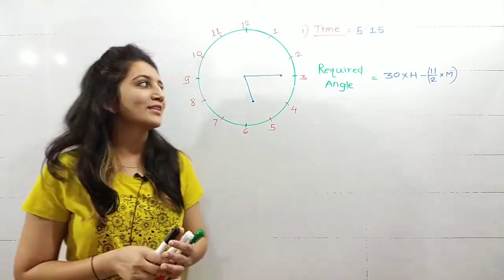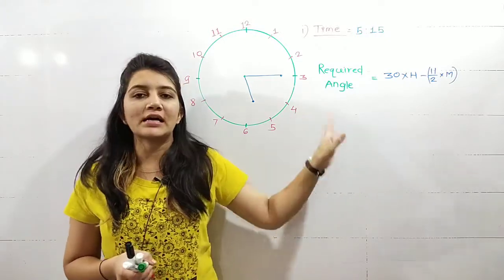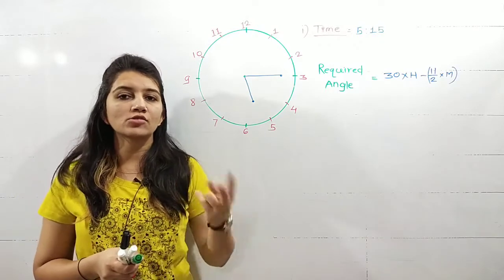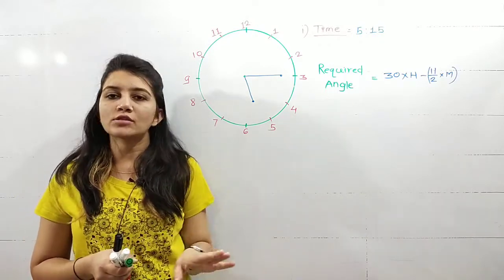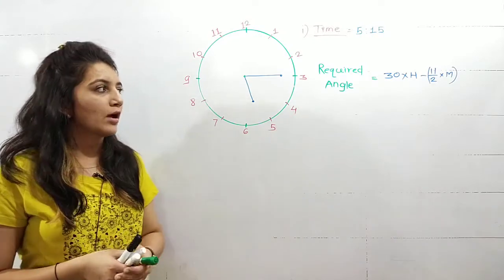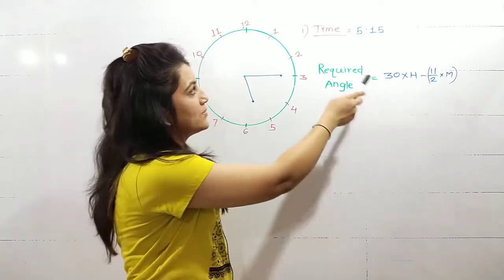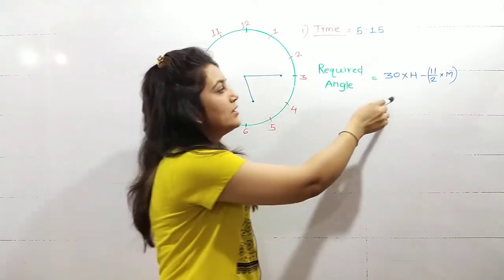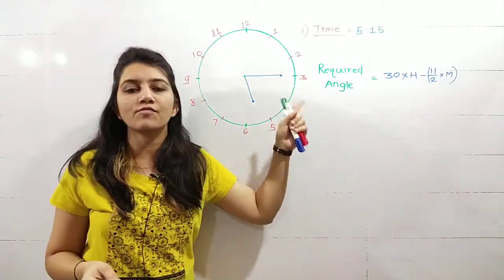Hello students, in this class we will be discussing the third shortcut to find out the angle between hour hand and minute hand at any time. In the last two lectures there were two shortcuts. Now in this third shortcut there is simply a formula that you can use directly. The formula is 30 into h, where h means the hour. If the time is 5:15, h value is 5, minus 11 by 2 into m, where m value is the minutes, meaning 15 minutes.